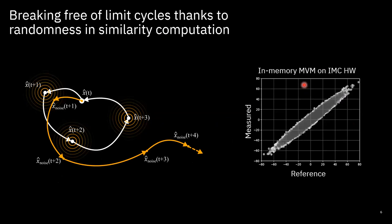The hardware we are trying to implement this resonator on is an in-memory computing hardware. We can do matrix-vector multiplication on this hardware, but not with high precision. For a given input, when we multiply a matrix with a vector we get an expected output, but the actual results have some stochasticity. If you expect a zero, the measured result can be slightly off — it can have a plus or minus deviation from the expected result. Because of this, we are not always getting exactly the same result — it's a stochastic hardware.